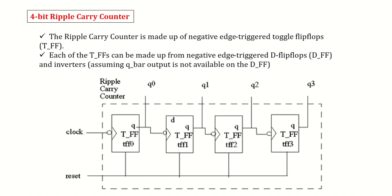In this 4-bit ripple carry counter we are using T flip-flops to design. Since it is a 4-bit counter I am using 4 T flip-flops. I am providing a clock signal to the first T flip-flop and the next flip-flops will be taking the clock signal from the previous T flip-flop outputs, and in parallel we are taking the outputs Q0, Q1,